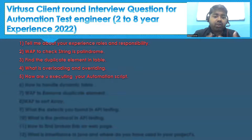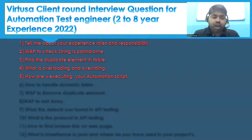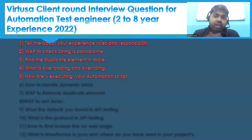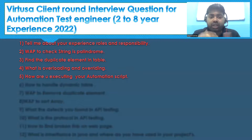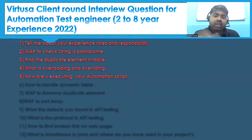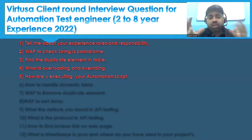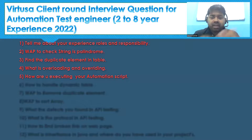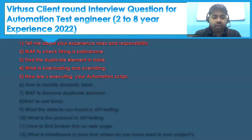Another question is: how are you executing your automation scripts? First you execute locally when you are developing and testing your script. Then there is another infrastructure level — you are using a CI/CD pipeline. Almost every company has a CI/CD pipeline, so you have to explain how you are doing it and how your company is following that process.